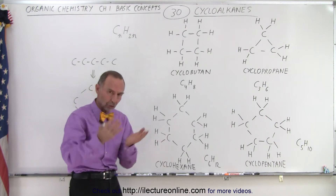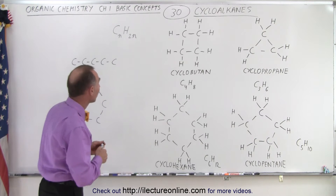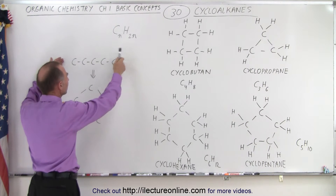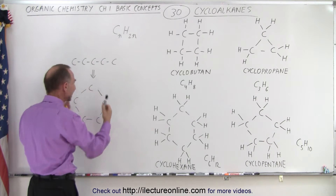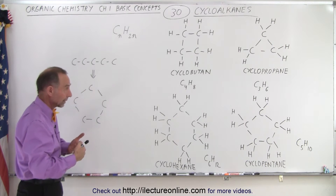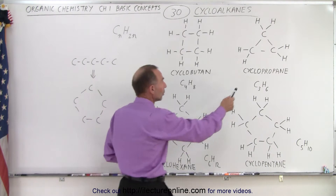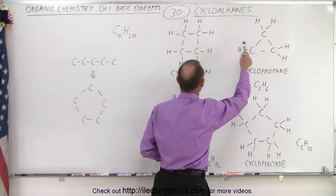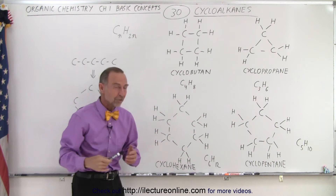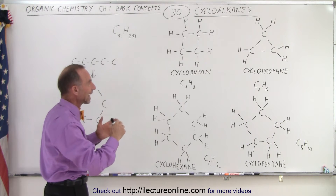Cyclo means that it's circular. These chains of carbons can actually form a complete ring, and the number of carbons in the ring can depend upon the chemical reaction — we can end up with three carbons, four carbons, five carbons, or six carbons. These interesting arrangements are called cycloalkanes.